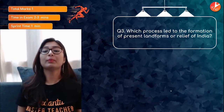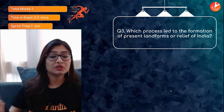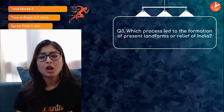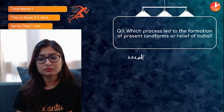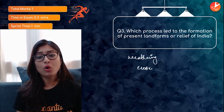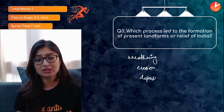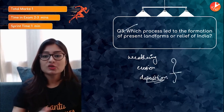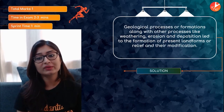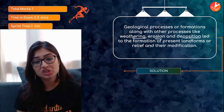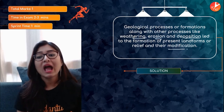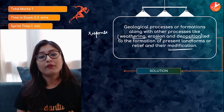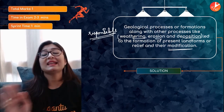Third question: which process led to the formation of present landforms or relief of India? For any region in the world, there is a general process involved — soil erosion, deposition, and sedimentation. When all these processes come together, relief formations occur. In India's case, geological processes along with weathering, erosion, and deposition led to the formation and modification of present landforms and relief.